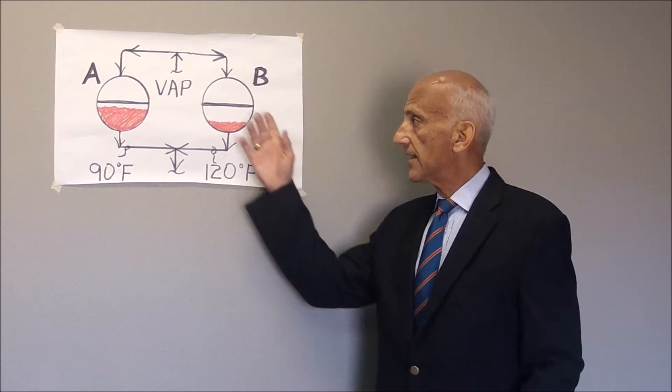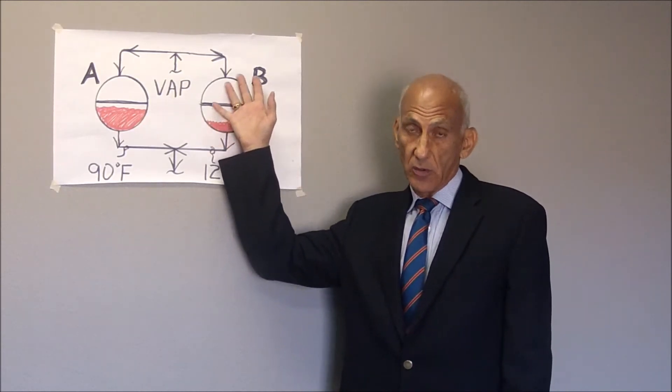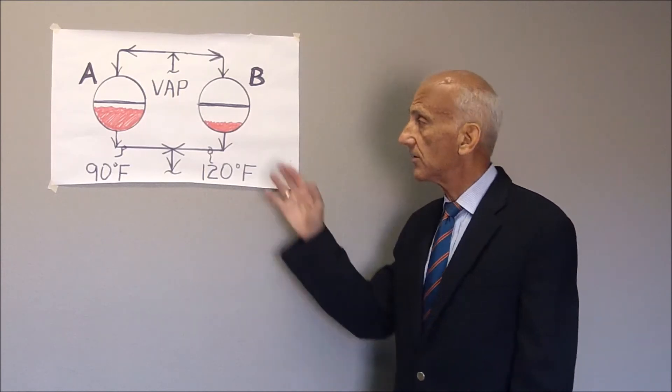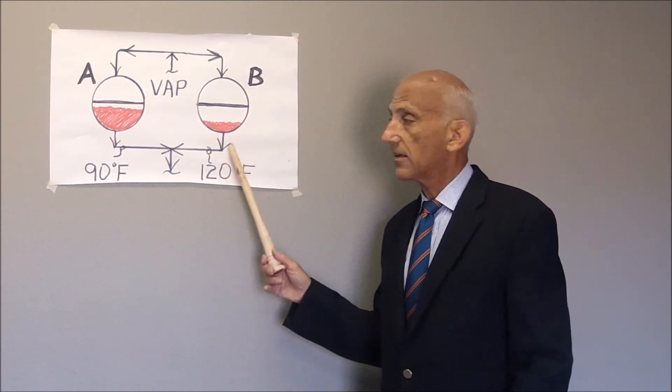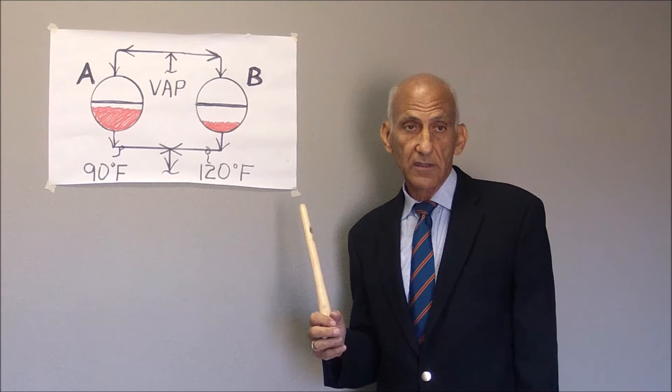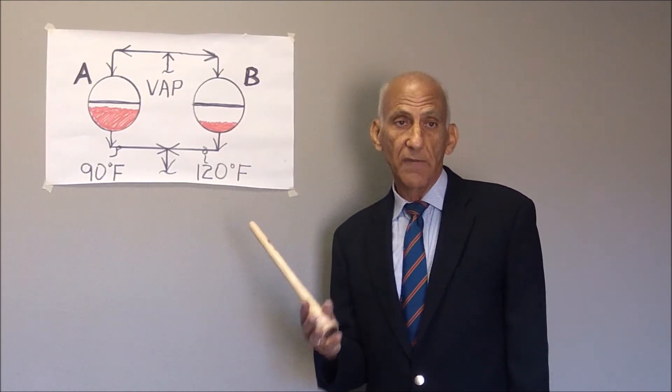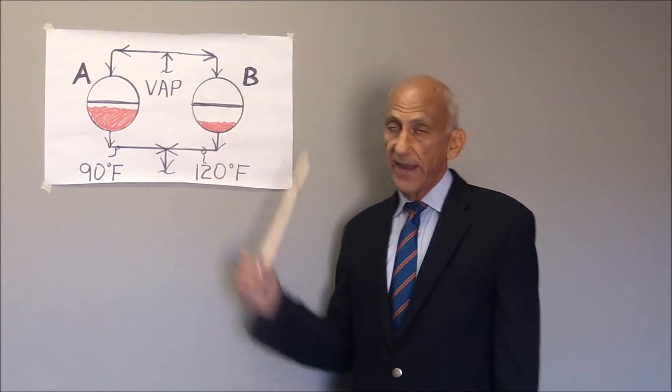So the condenser duty of B will go up, and it will have a tendency to develop a higher condenser outlet temperature. Well, primarily because it's doing a bigger load of condensation than condenser A.